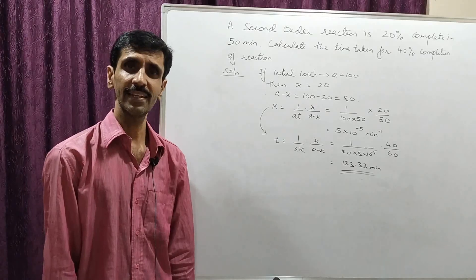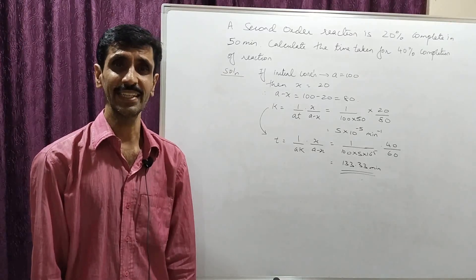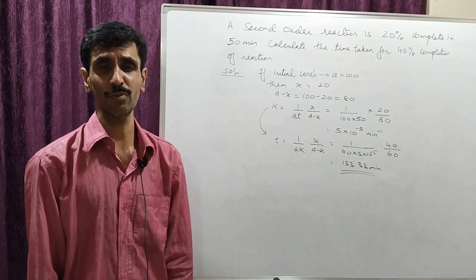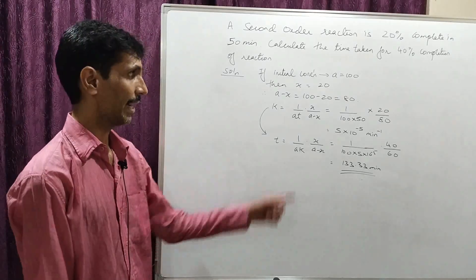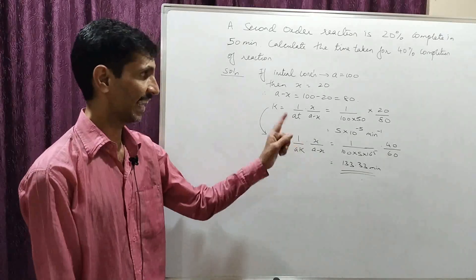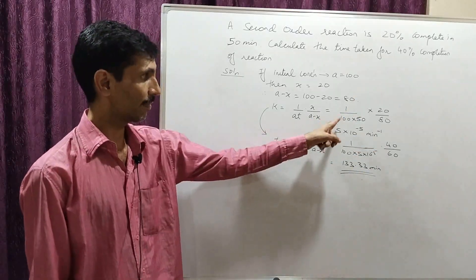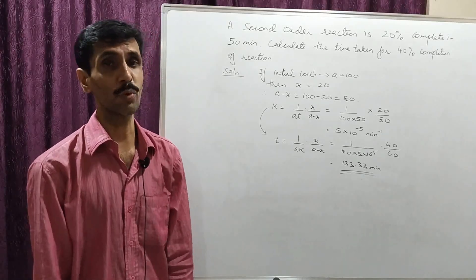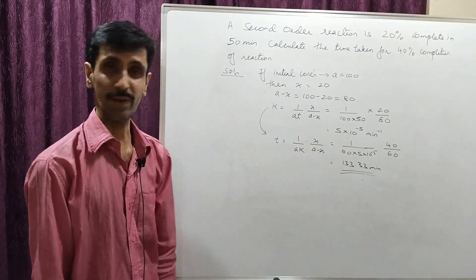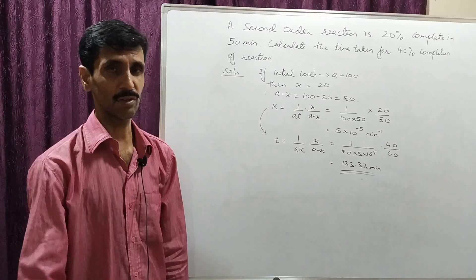Applying the integrated rate law equation for second order: 1/(a) × x/(a−x) × 1/t. Substituting: a = 100, t = 50, x = 20, a−x = 80. So x/(a−x) = 20/80 = 1/4, and 1/(100 × 50) = 1/5000. Therefore k = (1/5000) × (1/4) = 5×10⁻⁵ minute inverse. The unit is minute inverse because time is expressed in minutes.